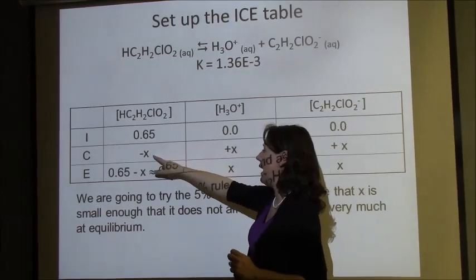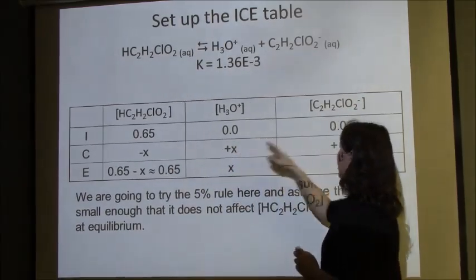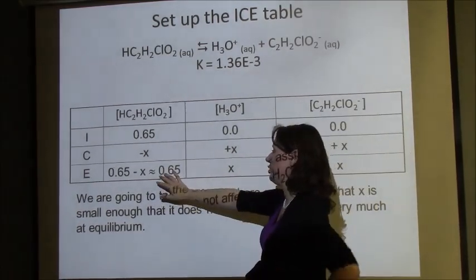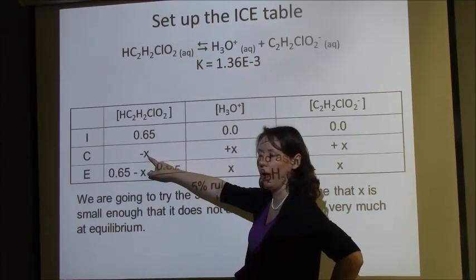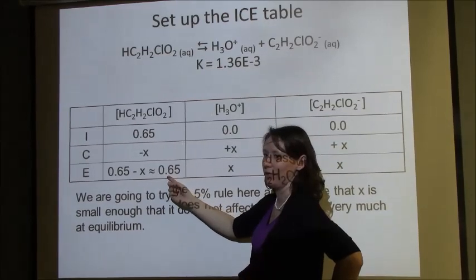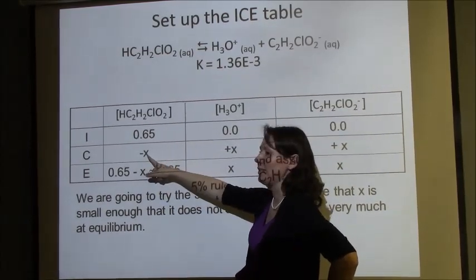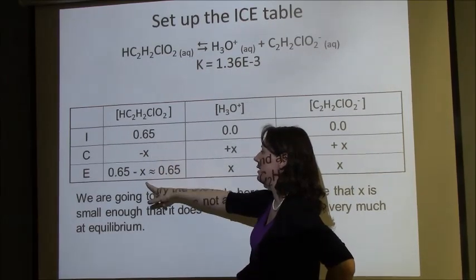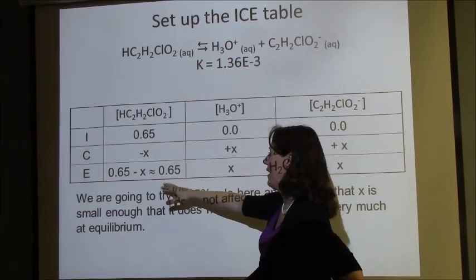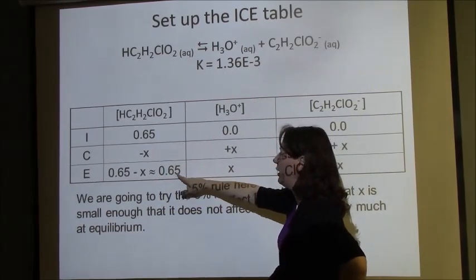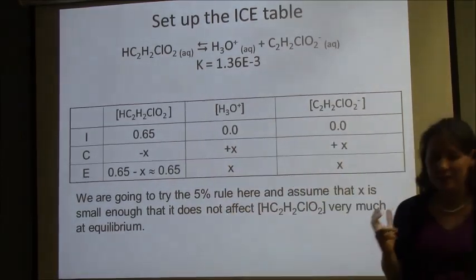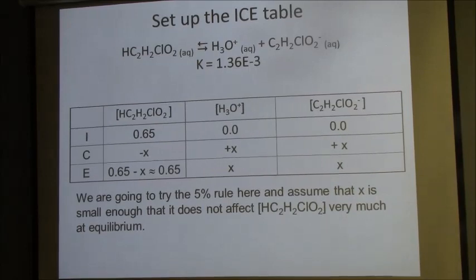We're assuming that this is going to go down by some quantity X, and this is going to go up by some quantity X. Now, here's where the 5% approximation comes in. We're going to assume that X is so small that when we subtract it from 0.65, it's still essentially 0.65. We're going to assume that X is such a small number that when we subtract it out, we might get 0.6499999, which is essentially 0.65. We're going to assume that at equilibrium, the concentration is the same as where it began. That is the fundamental theory of the 5% approximation.